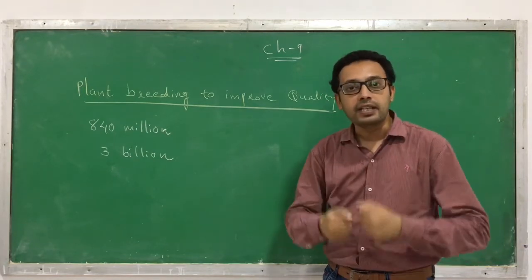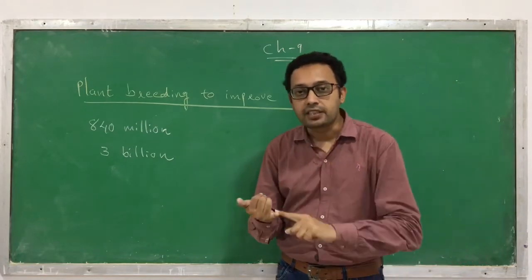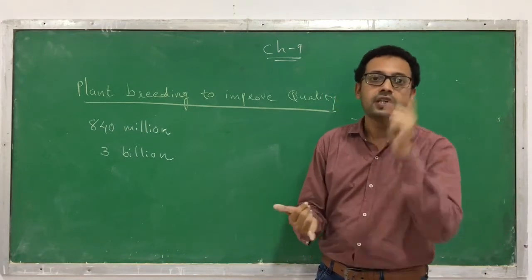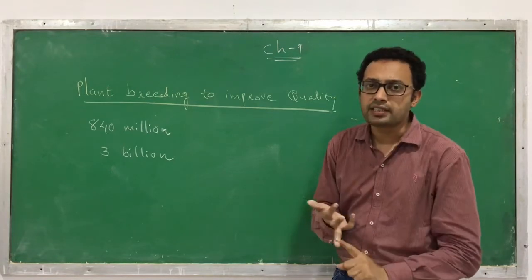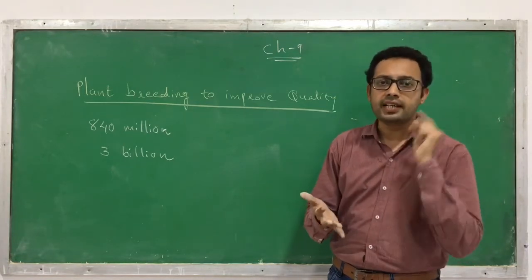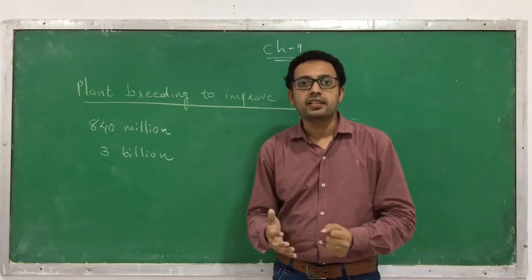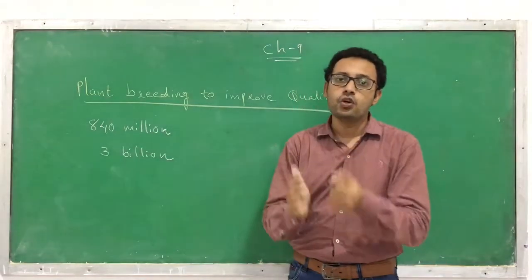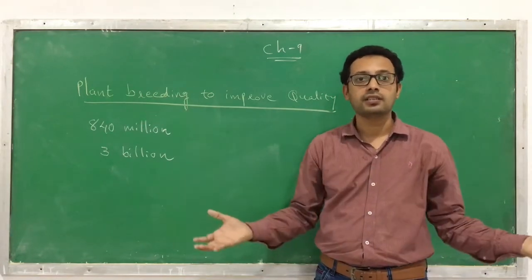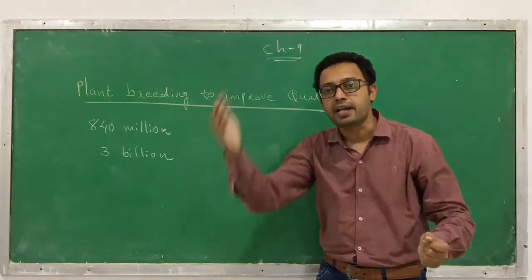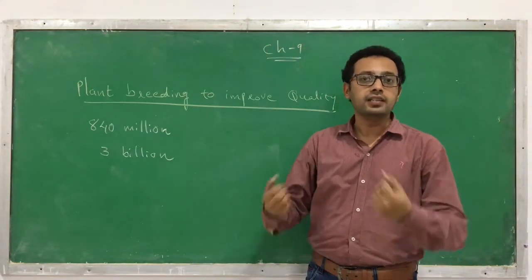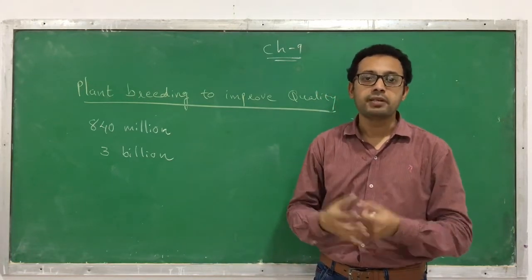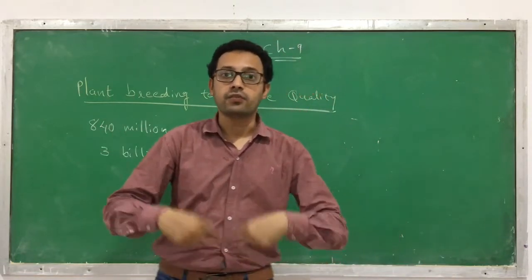Three billion people do not get a proper quantity or quality of food because they do not have enough money to buy all types of food. To get all types of nutrients, we need vegetables, fruits, legumes, seeds, meat, eggs and various other materials. But these 3 billion people cannot afford all of these things, so their hunger may be satisfied but they suffer from hidden hunger — they are not getting all the nutrients they require.